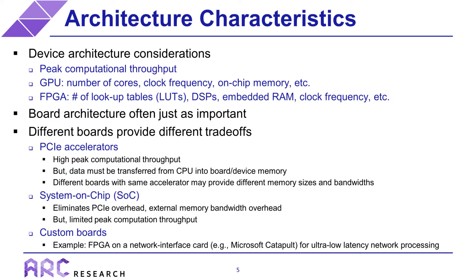The architectural characteristics of an accelerator are obviously another important consideration. In the simplest case, you could perform an optimistic prediction by just considering the peak computational throughput of each accelerator device. For a GPU, this throughput could be estimated based on the number of cores, the clock frequency, and potentially the amount of on-chip memory such as registers and shared memory. For an FPGA, you could make predictions based on the number of lookup tables, the number of DSP units, and the size and amount of embedded RAMs. However, these predictions will often be very inaccurate compared to the actual realizable performance.